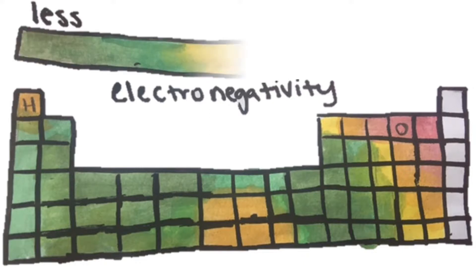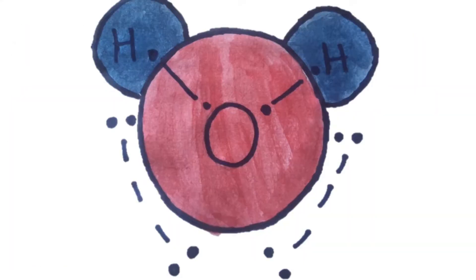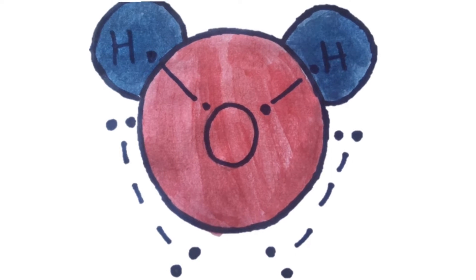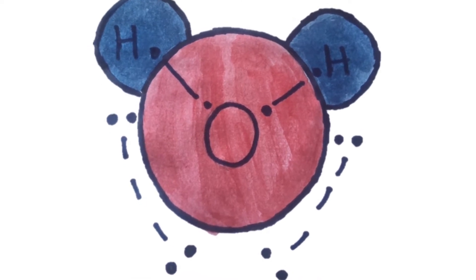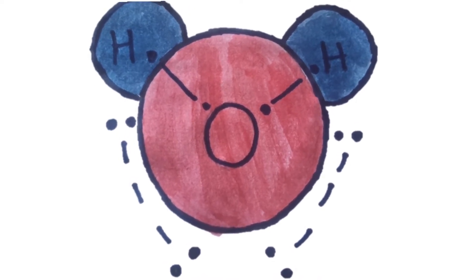Electrons are attracted to elements that have the highest electronegativity. This means that electrons will spend more time orbiting the nucleus of the more electronegative atom, oxygen, and less time orbiting the less electronegative atom, hydrogen.